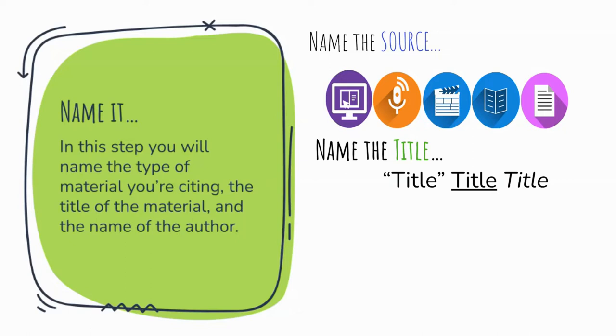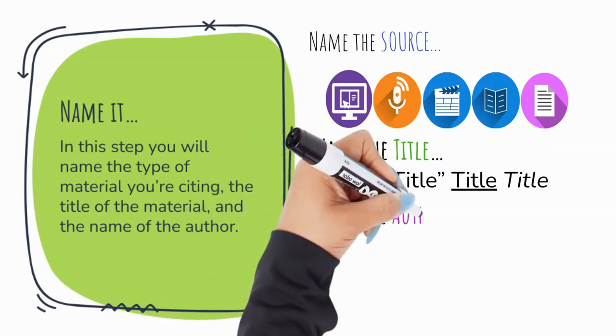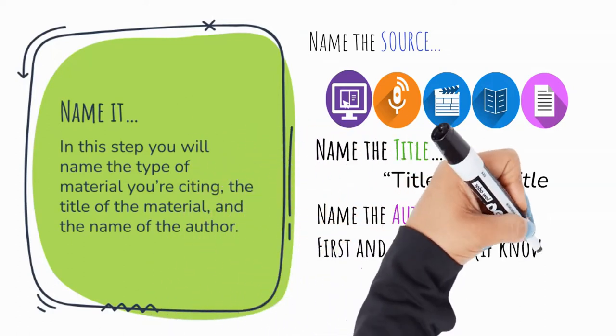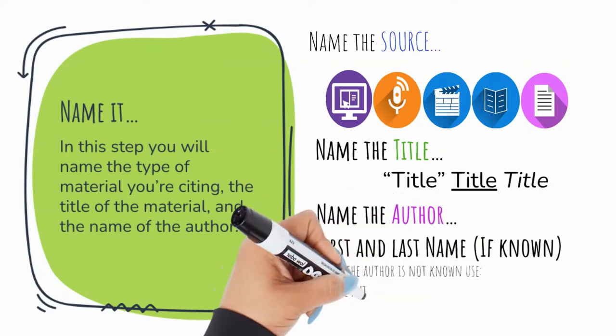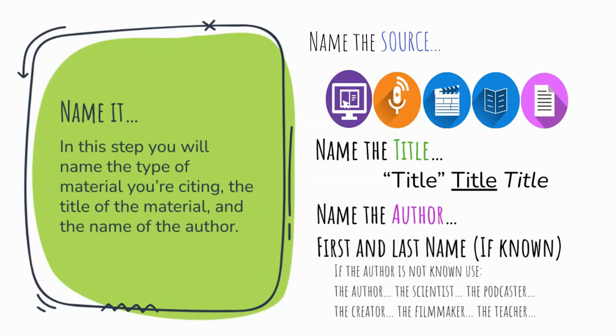During this step, you can teach the students the proper punctuation for citing these titles. And finally, we add the author's or creator's name to the sentence. If the author or creator is unknown, the writer can use a generic title like the author or the creator, even the scientist or the teacher if you're doing an activity in class.